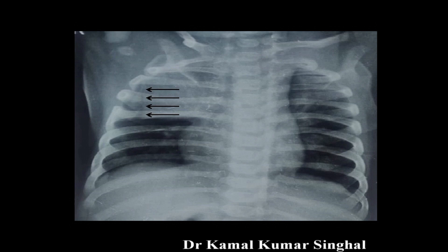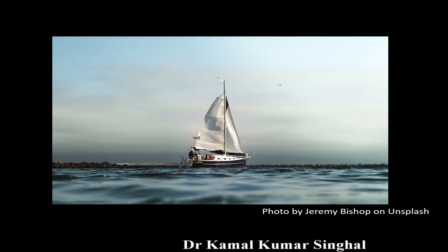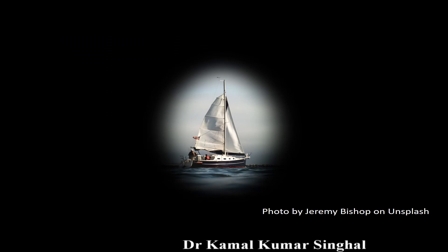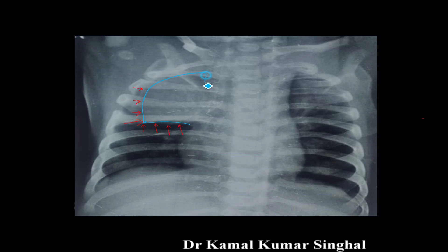This has been described as the sail sign created by the thymus. So what is a sail sign? In this picture, what you see is a boat and its sail. The thymic shadow in our patient resembles the shape of the sail of the boat. So this was an example of the thymic shadow being misread as consolidation of a lung lobe.